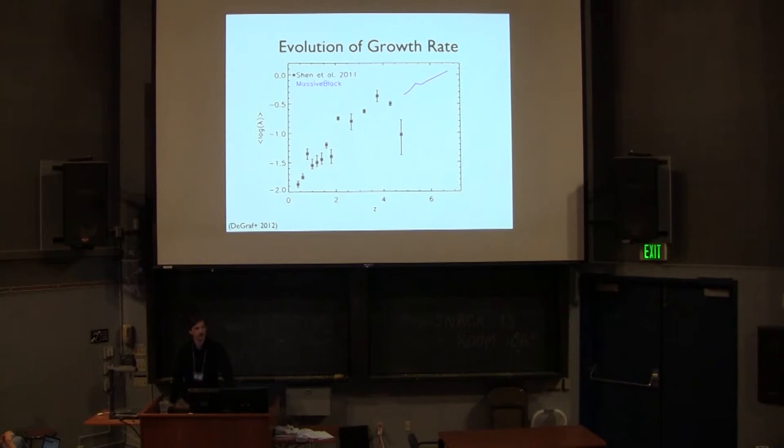We can also see the typical evolution in the Eddington fraction. So this is looking at the Eddington fraction as a function of redshift. In blue is our simulation prediction, and that's compared to observational data from Yui Shen. You can see that we get the normalization and the slope very, very much correct. So everything there is fully consistent.